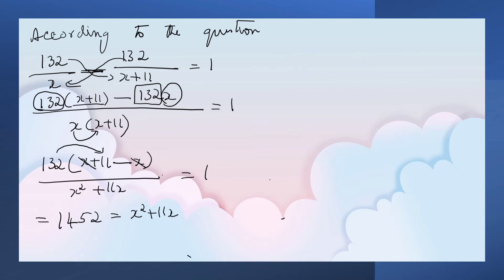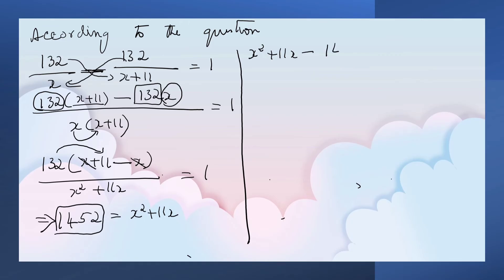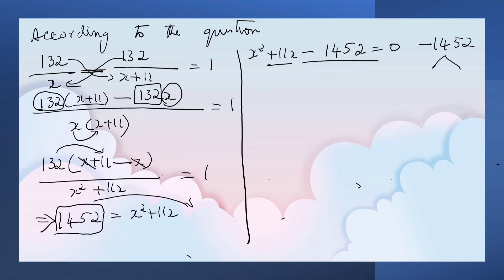Now let us write it in standard form: x squared plus 11x minus 1452 equals 0. To factorize, we need two numbers whose product is negative 1452 and whose sum is plus 11. Those numbers are 44 and negative 33: multiplying gives negative 1452, and adding gives plus 11.